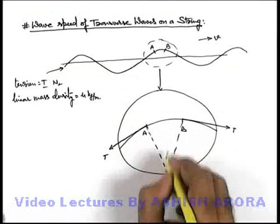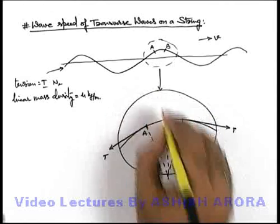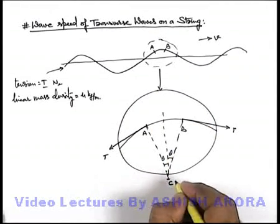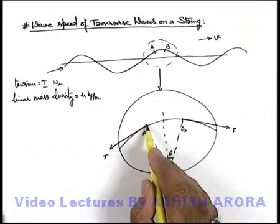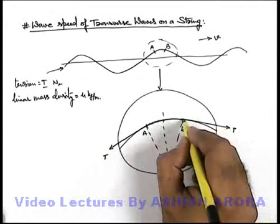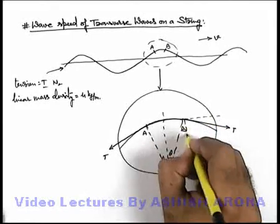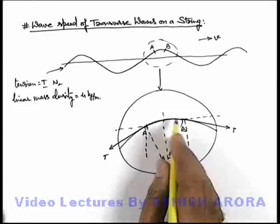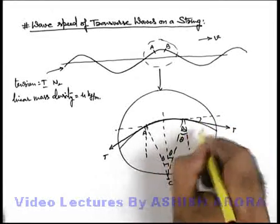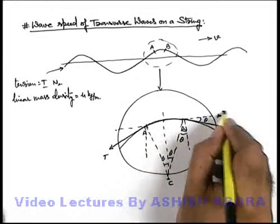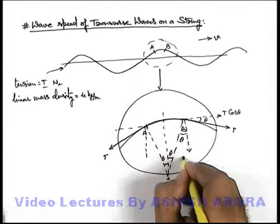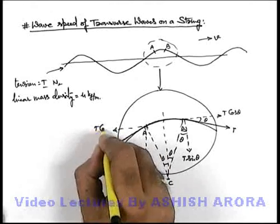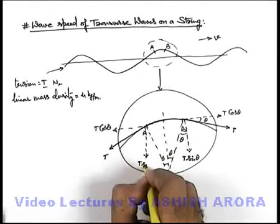In this situation, if we consider that this section A-B is subtending an angle 2θ, let us consider its angle bisector also, and it subtends an angle 2θ at the centre of curvature of this section A-B. In this situation, we just resolve the tension into two components: one is along the direction of propagation, the other is perpendicular to that. This angle will also be θ. So here the force will be T cos θ, and here it will be T sin θ. Similarly, due to this tension, here it is T cos θ and here it is T sin θ.